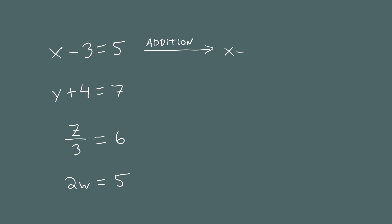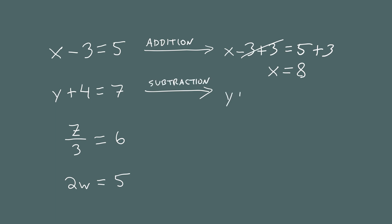So if you were to add 3 to both sides, the 3's cancel on the left, leaving x by itself and giving you the answer x equals 8. In this second equation, y plus 4 equals 7, to undo the plus 4 you use subtraction. If you subtract 4 from both sides, they cancel on the left, leaving y by itself and giving you y equals 3.